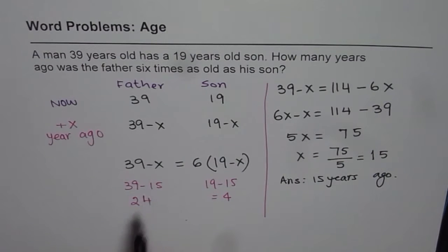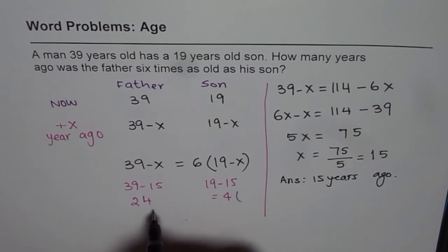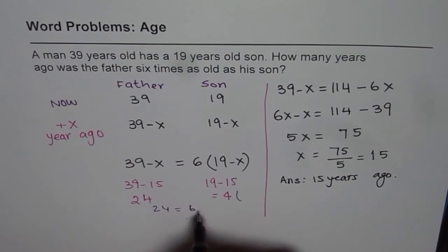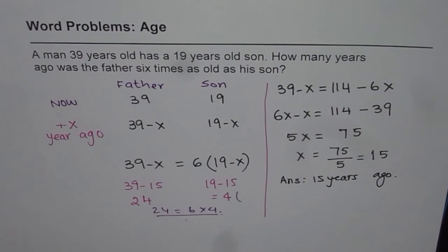9 take away 5, so 24. And clearly 24 is indeed 6 times 4. So 24 equals 6 times 4. So that is correct. So that is how you can check your answer.